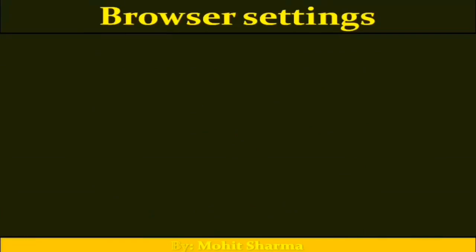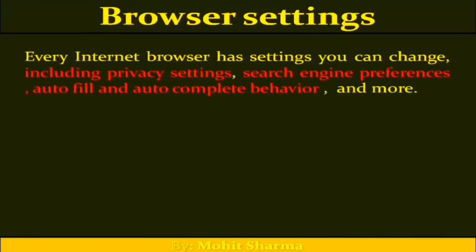Browser settings. Every internet browser has settings you can change, including privacy settings, search engine preferences, auto-fill and auto-complete behavior, and many more we can customize. With the help of settings we can manage our privacy and set search engine preferences. All of this can be done with the help of browser settings.